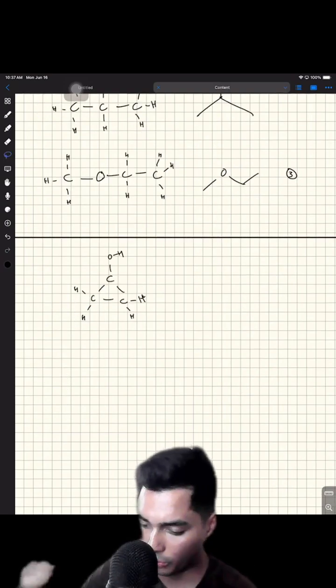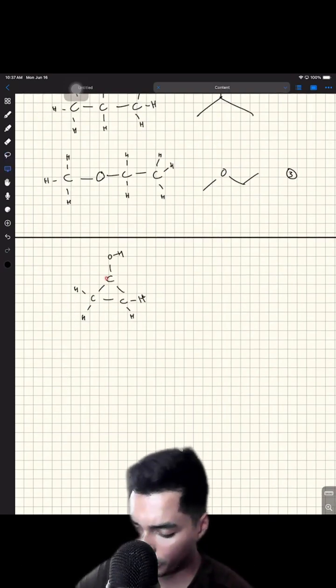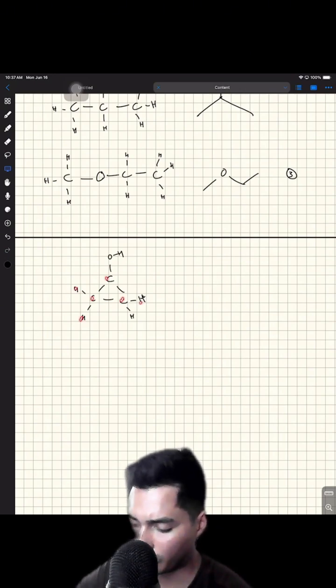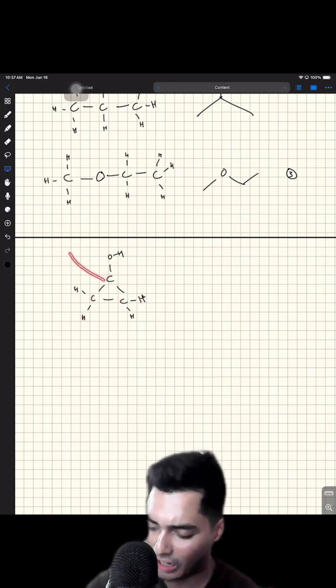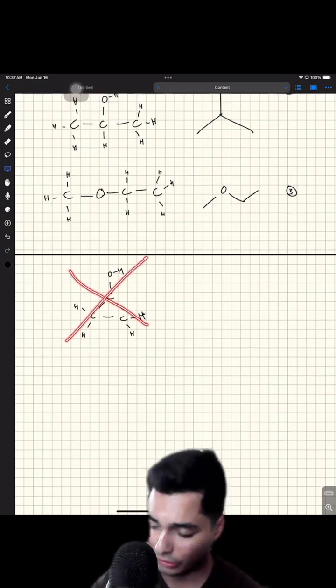So what about this guy here? We have one, two, three carbons, but we only have one, two, three, four, five hydrogens. So this is not a constitutional isomer guys. So these are the only three constitutional isomers.